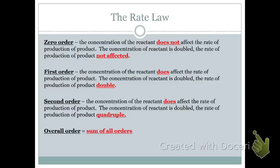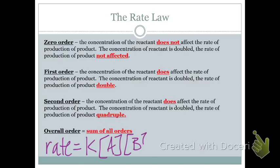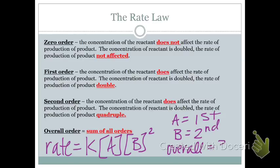Going back to the example reaction, if our rate was equal to K times concentration of A times concentration of B squared, then A would be first order, B would be second order, and the overall order would be third — just by summing up all the exponents.